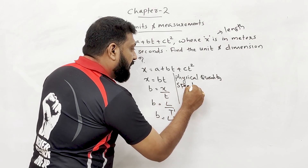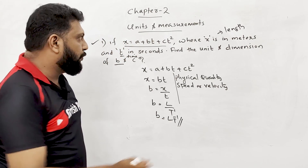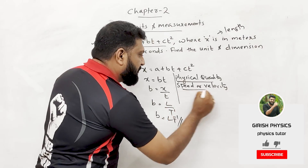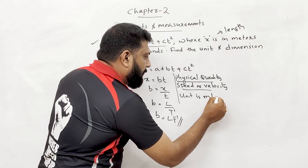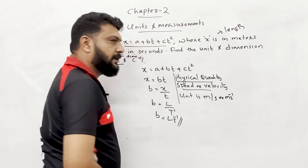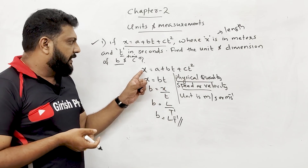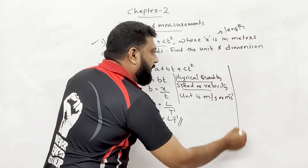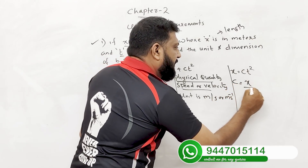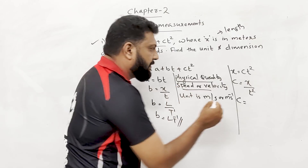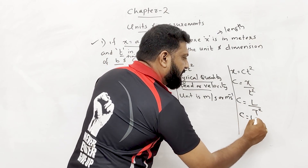L·T⁻¹ — what physical quantity is this? Speed or velocity! Unit is meter per second. Now for c: from x = ct², we get c = x/t², so the dimension of c is L by t squared, which is L·T⁻².